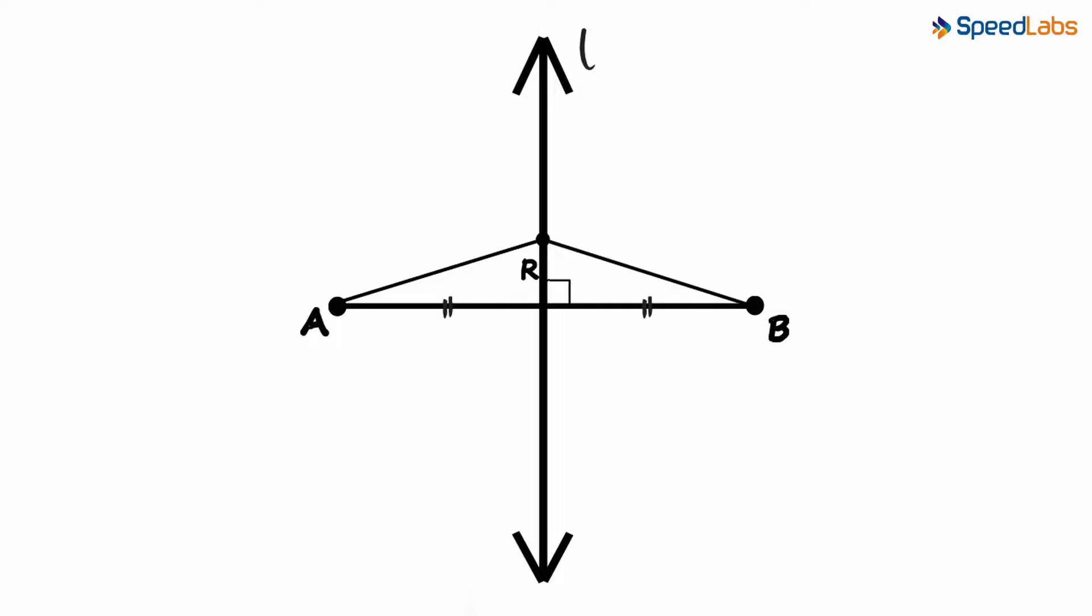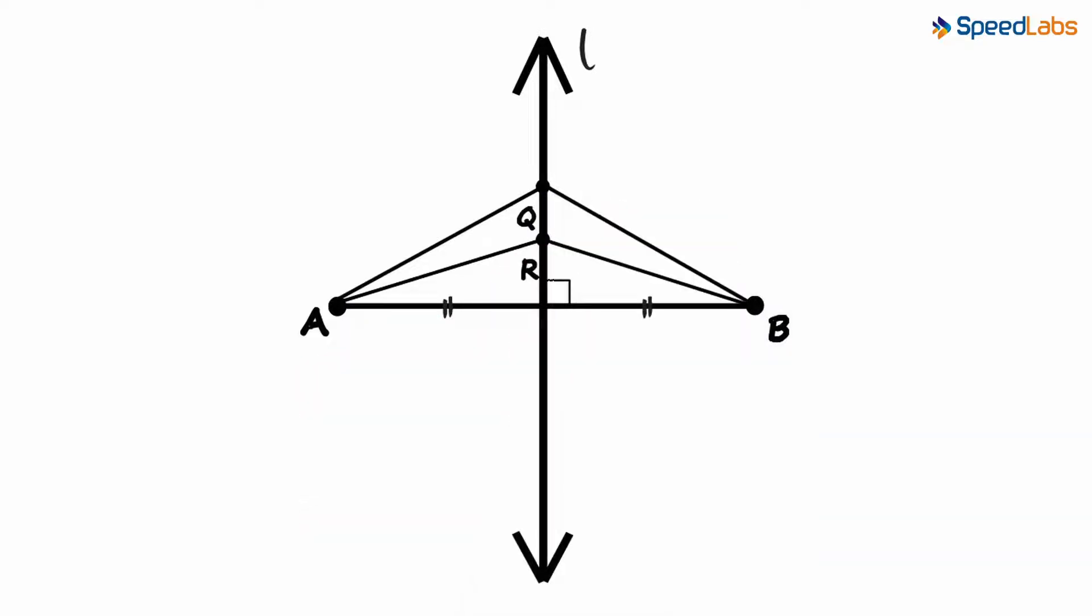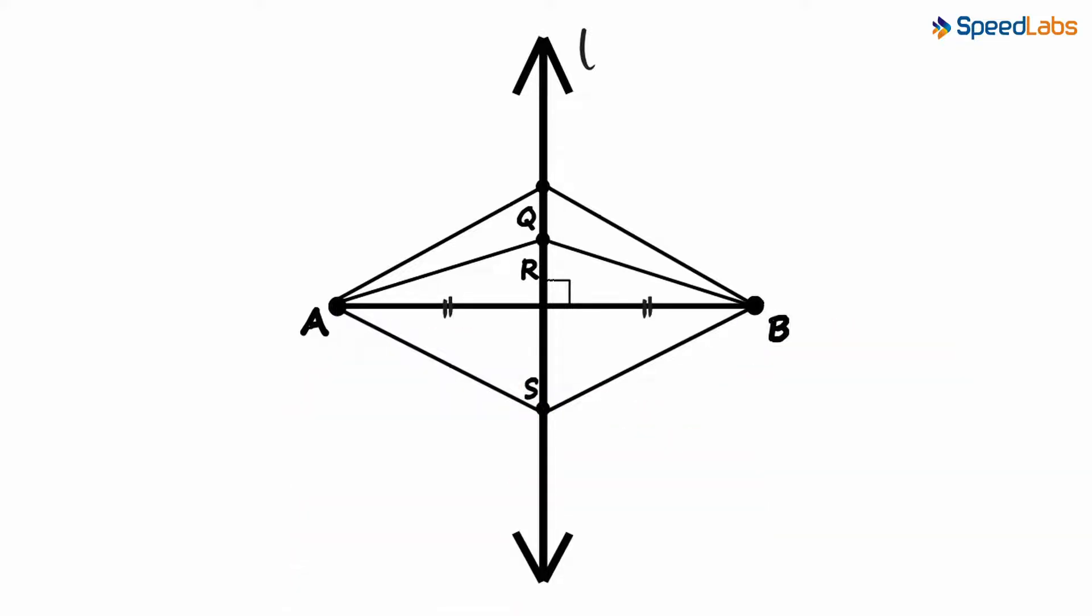Similarly, if we have a point Q, then AQ will be equal to BQ. Or if we have a point S here, AS will be equal to BS. This is called the perpendicular bisector theorem.